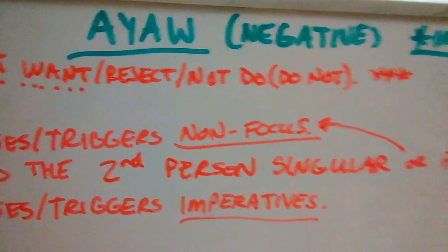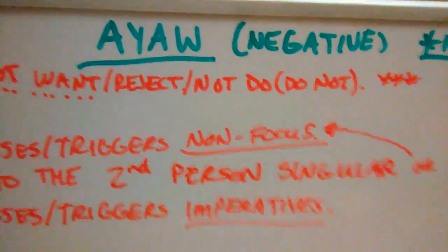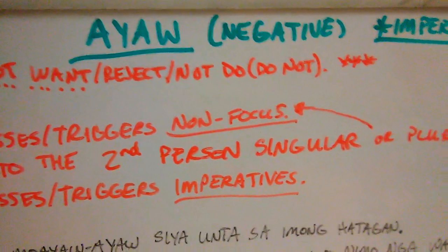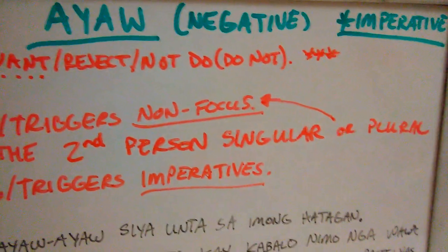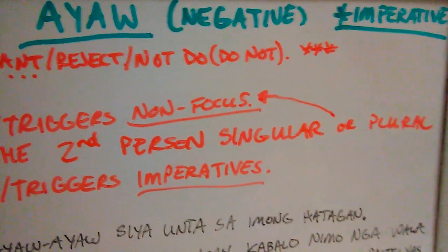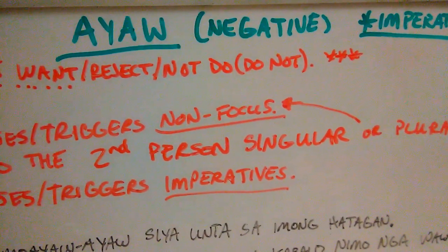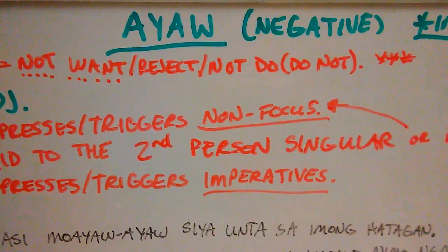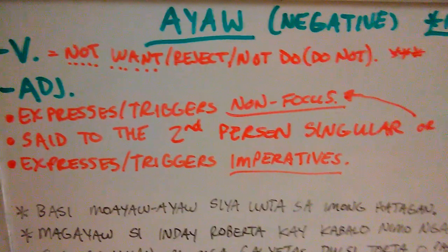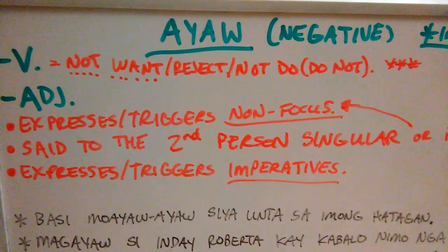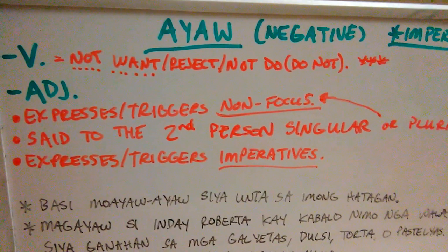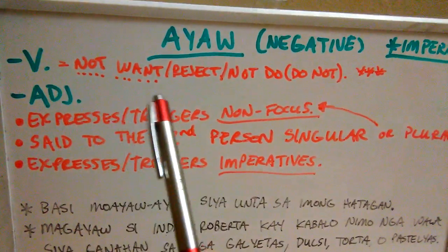Our first negative we're going to look at is 'ayaw' — two syllables. This negative is commonly used as an imperative, which is why you probably hear it a lot. However, it can also be used as just a regular verb. This is going to be just part one of however many parts there are, because this whole negative series is going to be long. Ayaw is expressed as a verb meaning 'not want.'